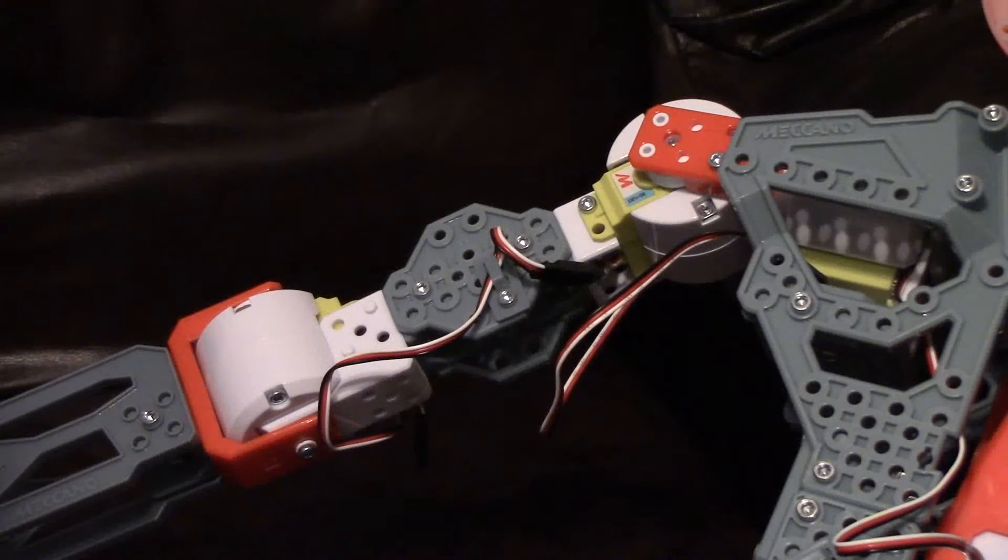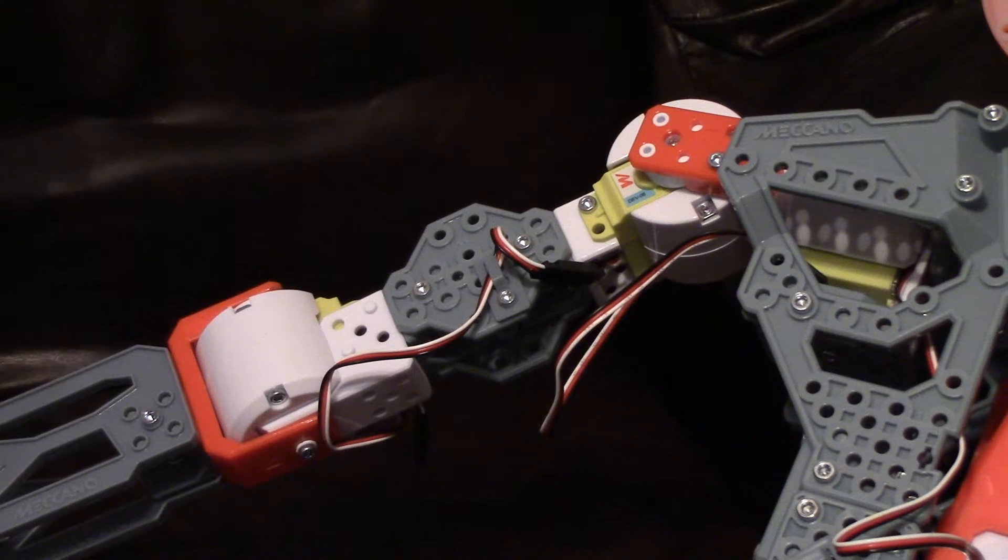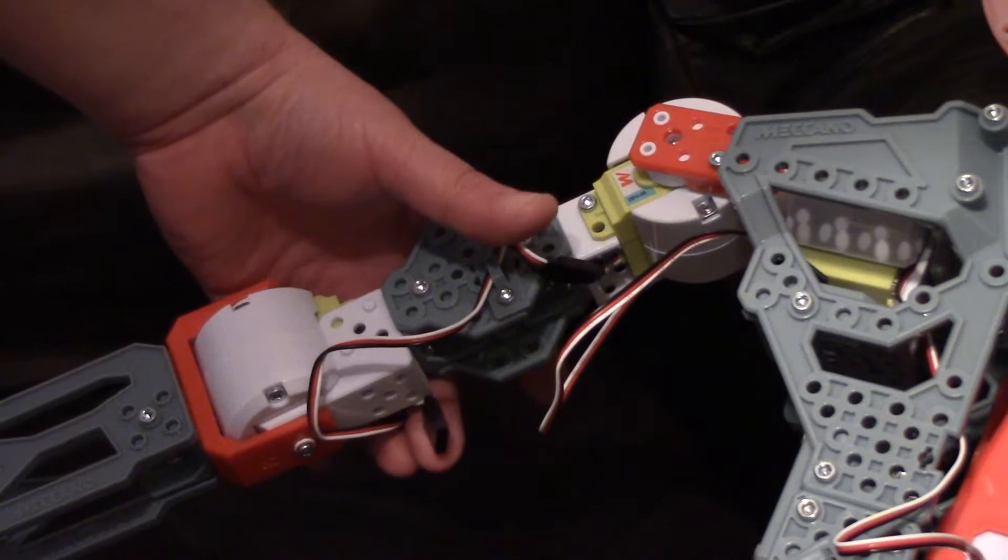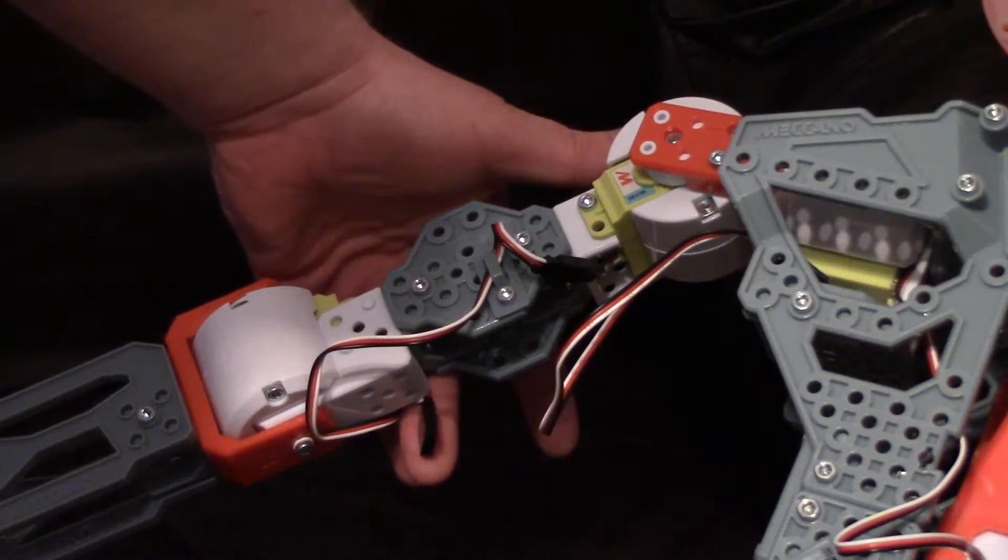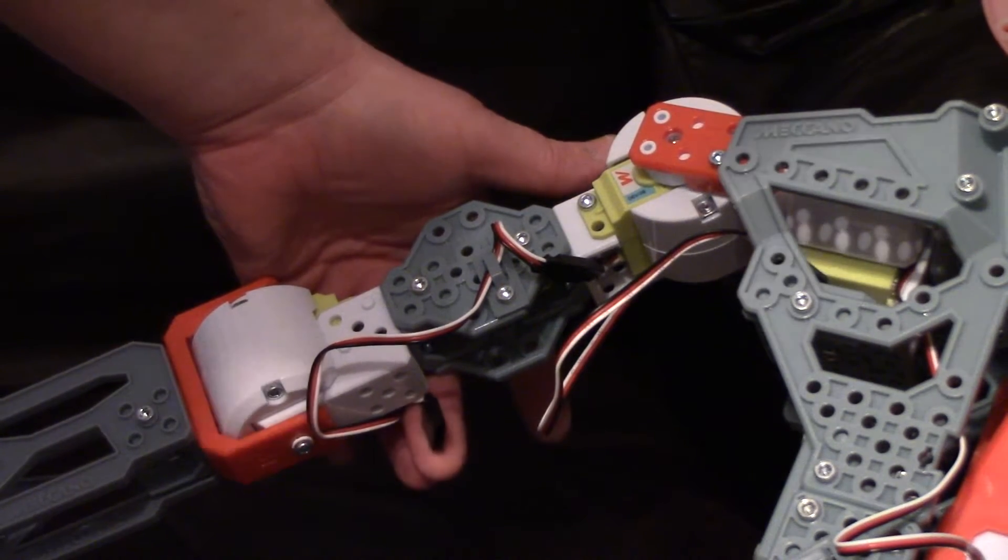Let's start at the elbow. All servo motors have a long and a short wire and the short one on the elbow servo is not used. It's a spare at the moment. That's to be used if you wanted to add another servo motor in the future and program it to work yourself.